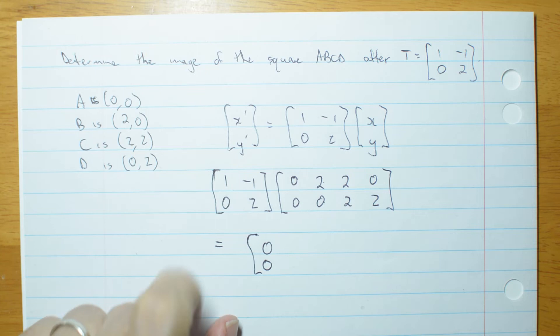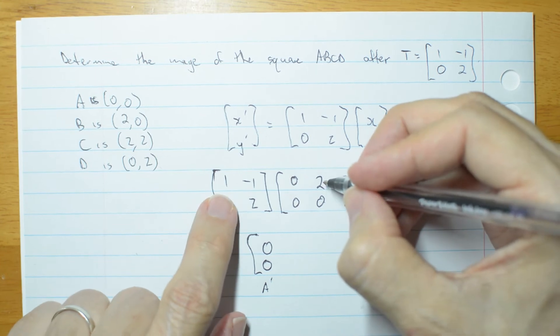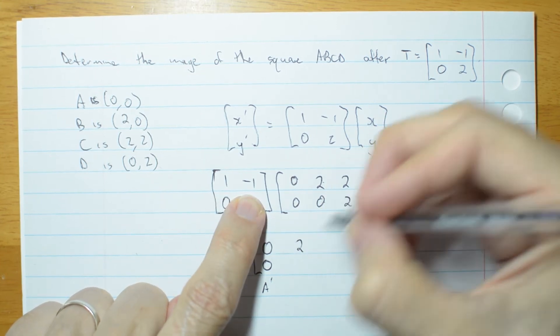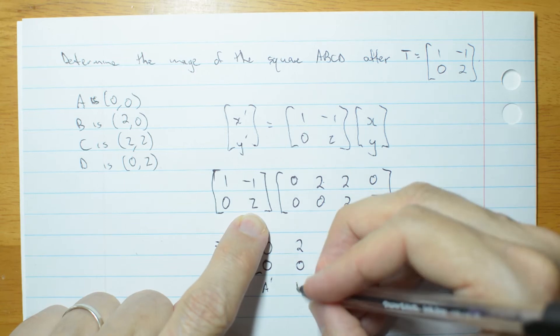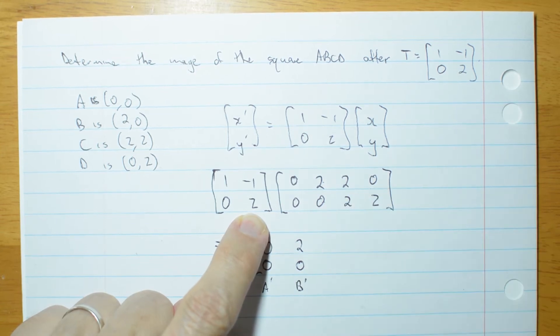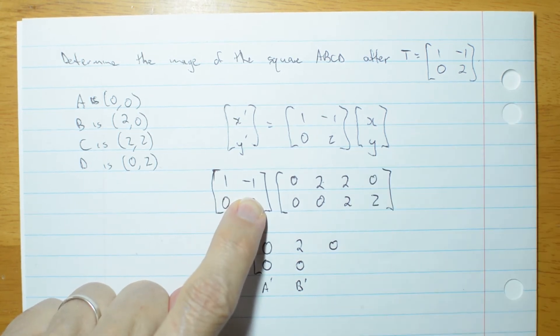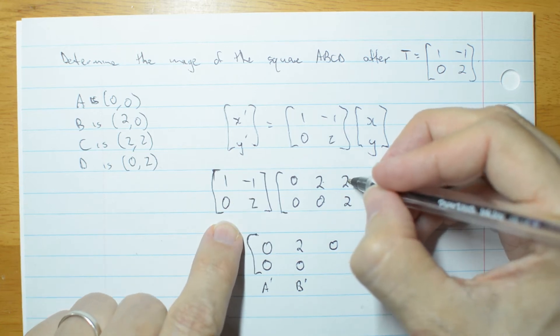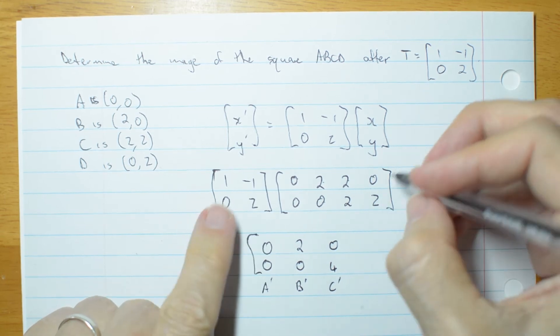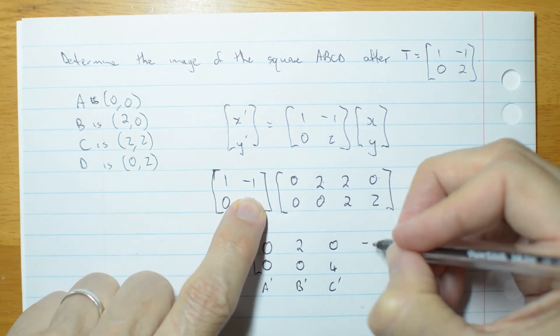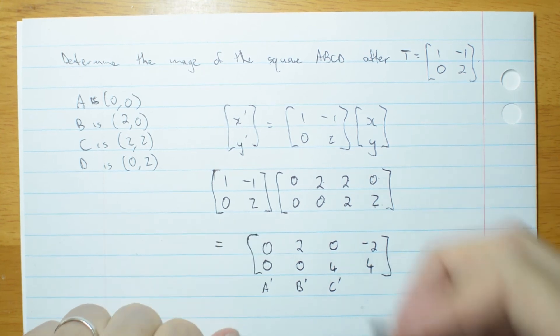Let's do B. 2, 0. And the y coordinate, 0, 0. So B primed hasn't moved either. What about C? C's coordinates, 2 take 2 is 0, and the y coordinate, 0, 4. That's C primed. Let's try D. 0, -2. And 0, 4. And that's D primed.